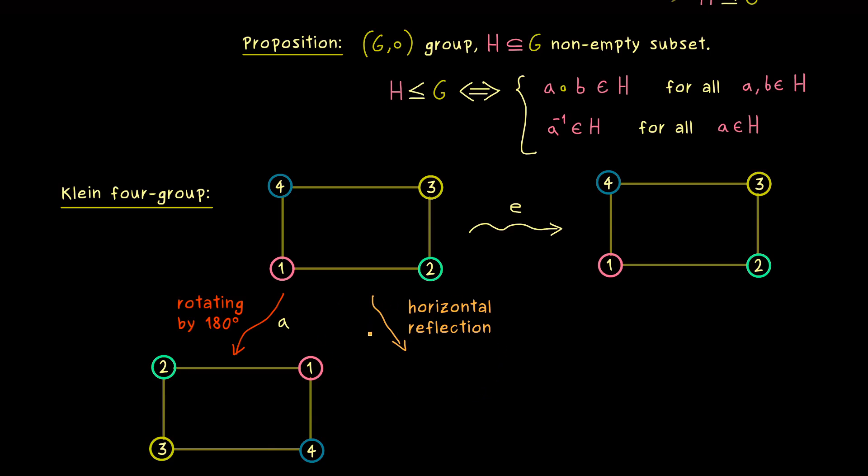On the other hand, we can do a horizontal reflection, where we mirror the whole rectangle on this axis here. So there we have our element B. This is the rectangle we get out. Now in addition, we can also do a vertical reflection.